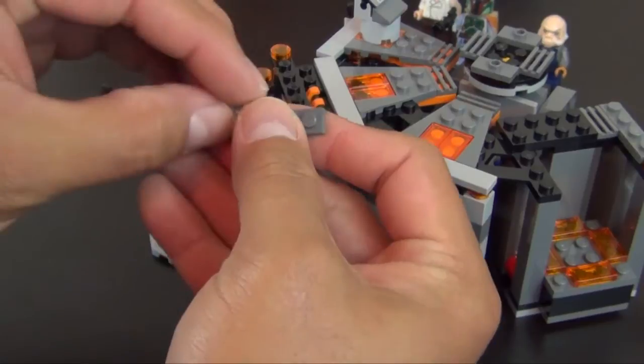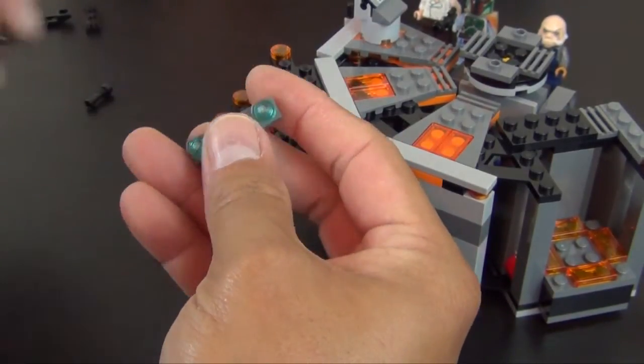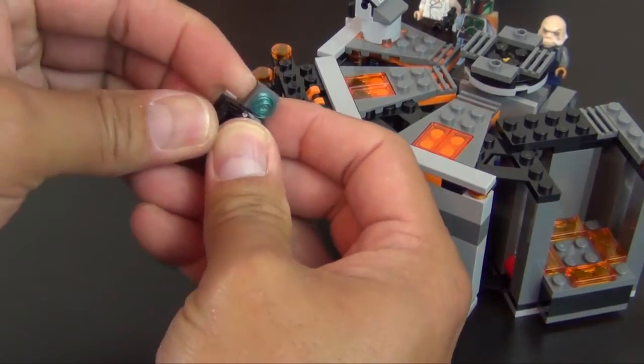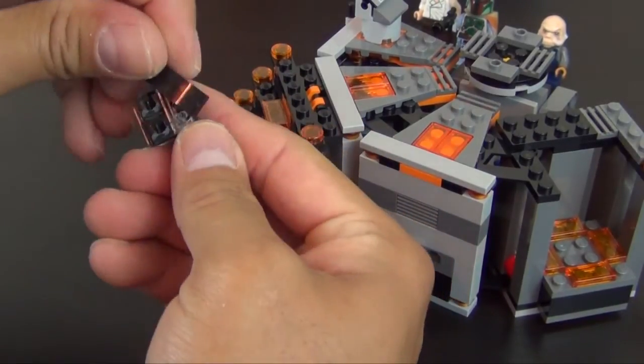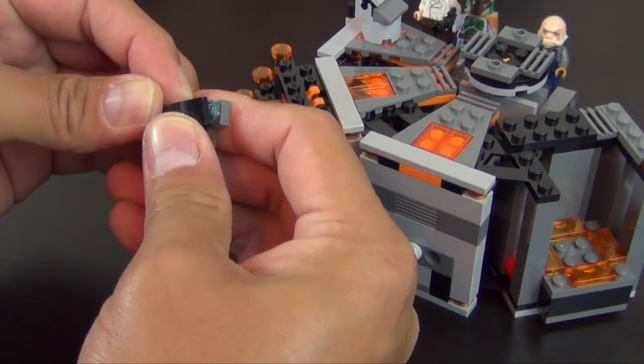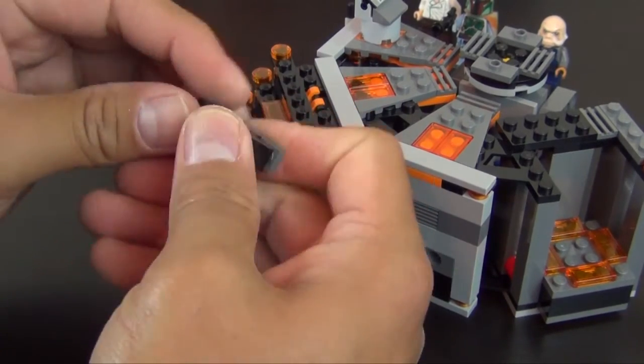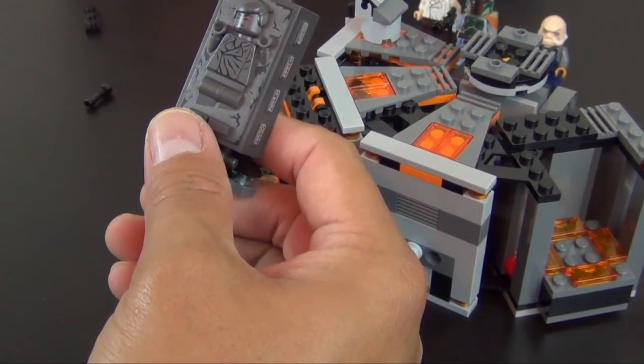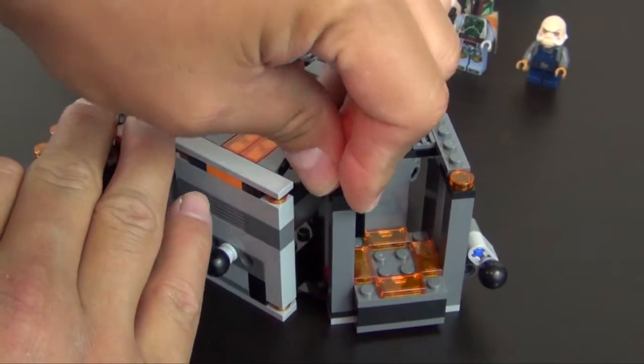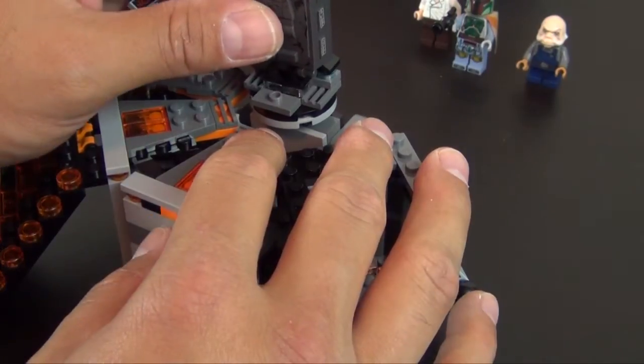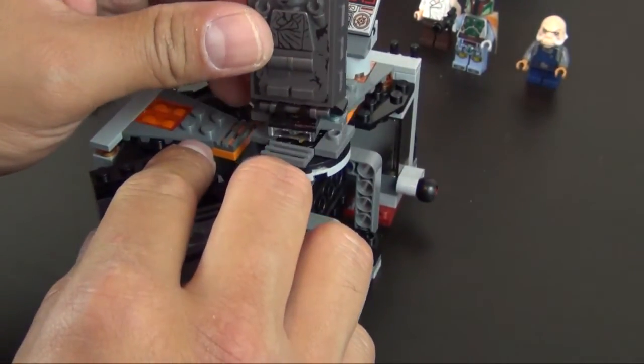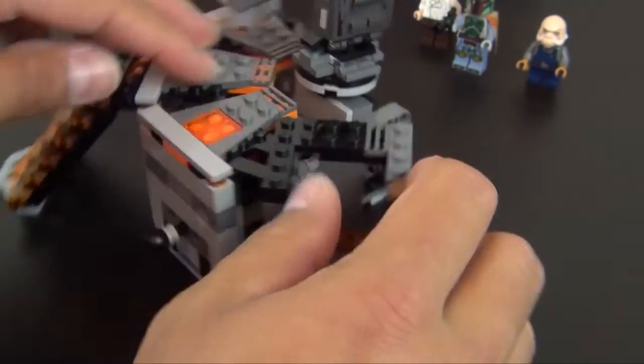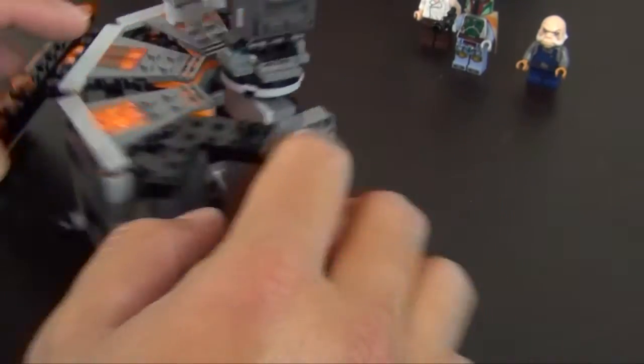Now we're going to build our little freezing chamber element. That goes like that. That piece there. This piece goes here. Here. That really completes it.